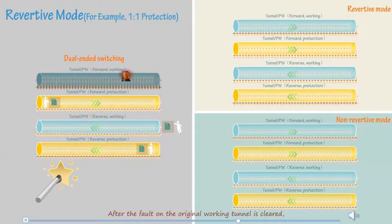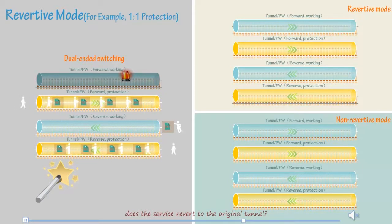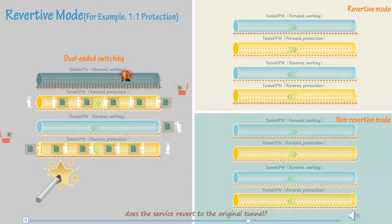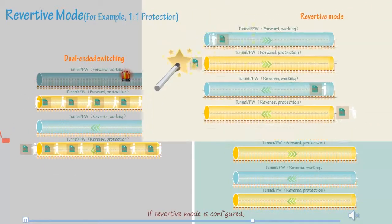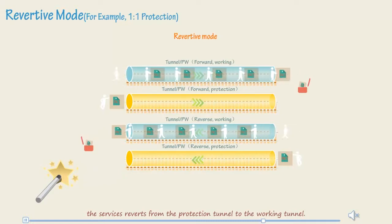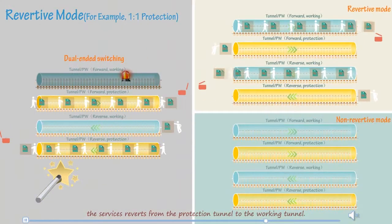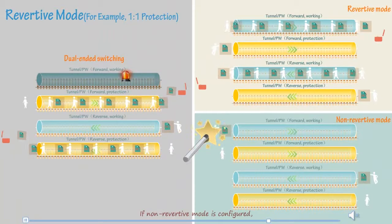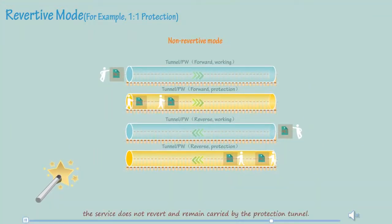After the fault on the original working tunnel is cleared, does the service revert to the original tunnel? If revertive mode is configured, the service reverts from the protection tunnel to the working tunnel. If non-revertive mode is configured, the service does not revert and remain carried by the protection tunnel.